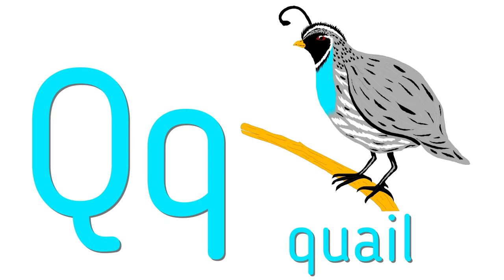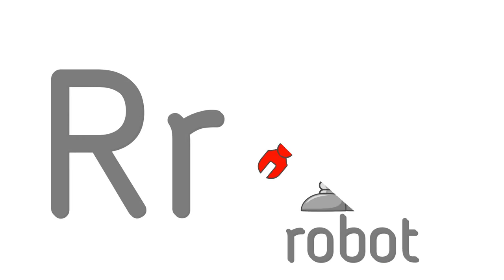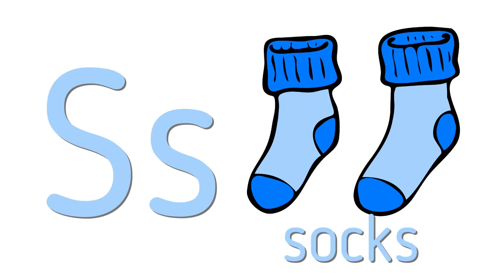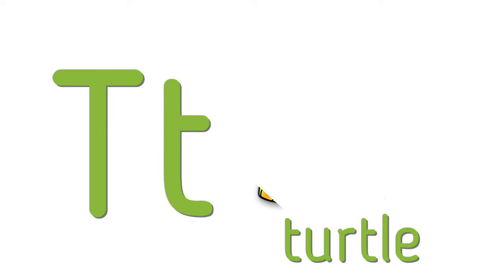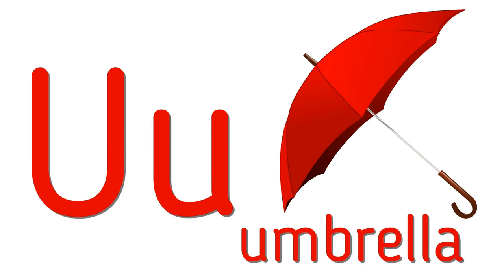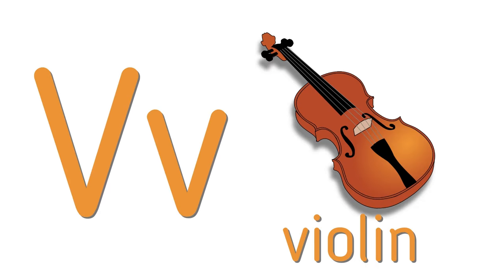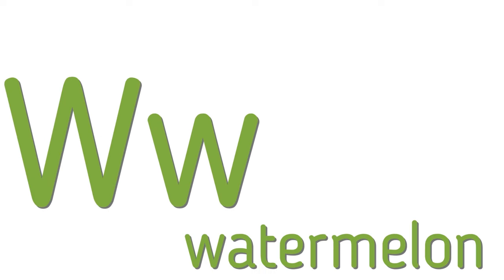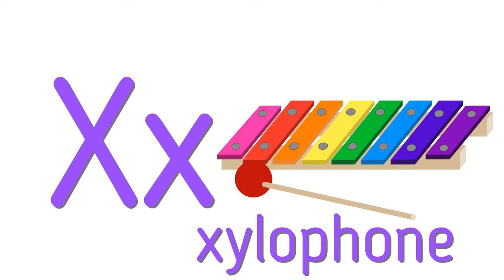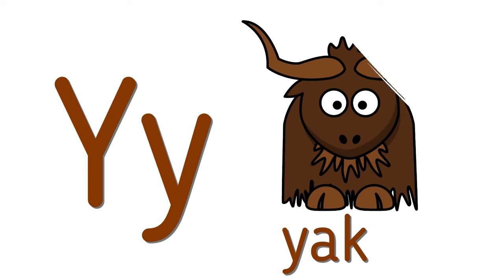P for Pear. Q for Quail. R for Robot. W for Watermelon. X for Xylophone. Y for Yak. Z for Zebra.